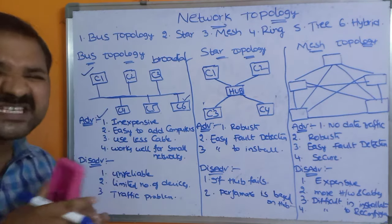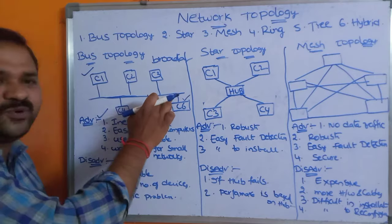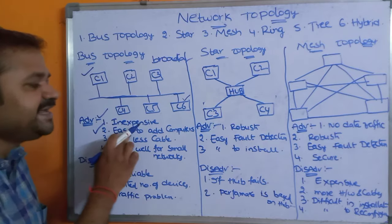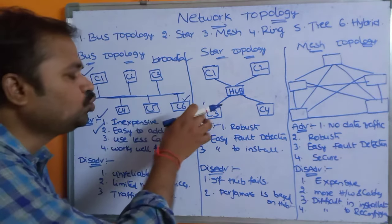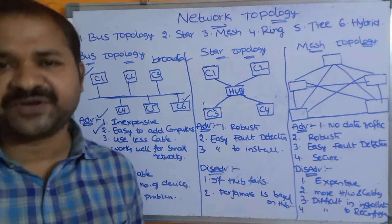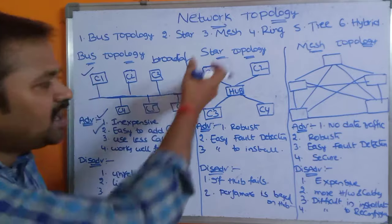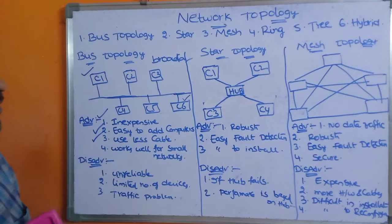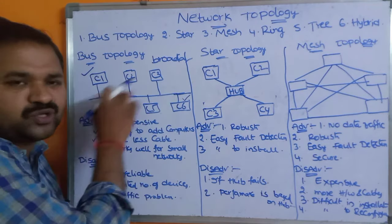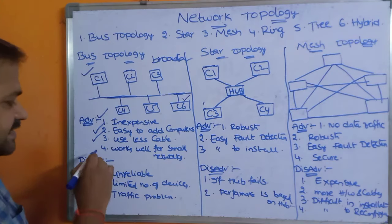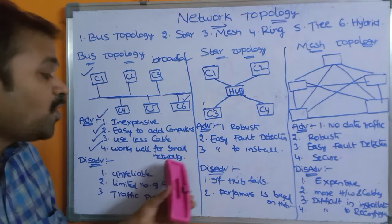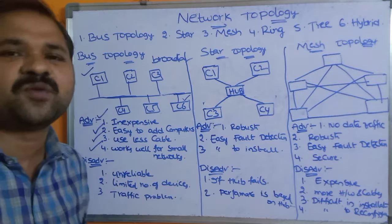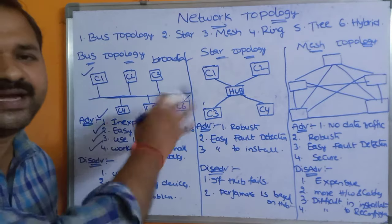The advantages of bus topology: first, it is very inexpensive because only one cable is required. Second, it is easy to add additional computers — simply attach them to the cable. Third, it uses less cable since only one cable is needed. Fourth, it works well for small networks and can support up to around 100 computers.